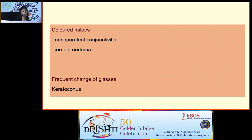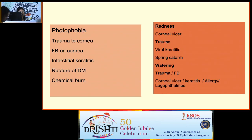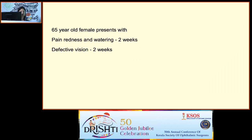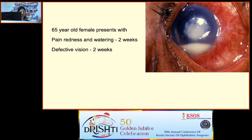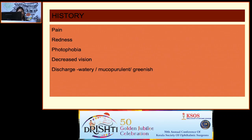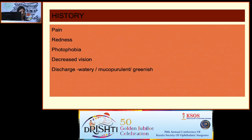You may also get symptoms like colored halos and frequent change of glasses in keratoconus cases. Other symptoms include photophobia, redness, and watering. For our first case — a 65-year-old female with pain, redness, watering, and defective vision for two weeks — this is a case of hypopyon corneal ulcer. When starting the history, ask about discharge character — watery, mucopurulent, or greenish tinge. Ask about trauma, contact lens wear, drug history, exposure to contaminated water, or previous ocular surgeries.